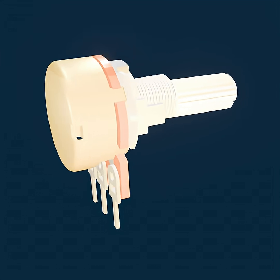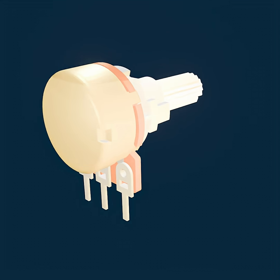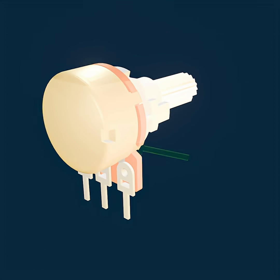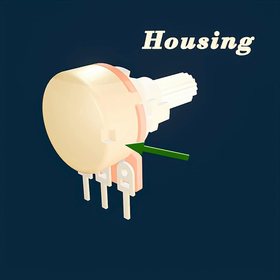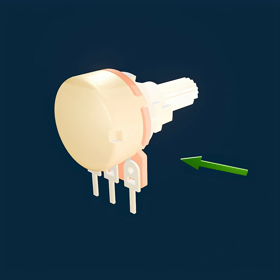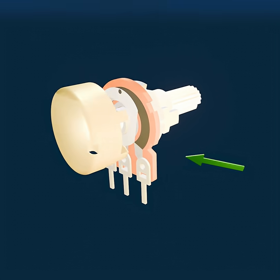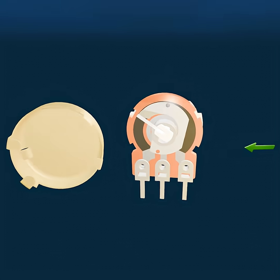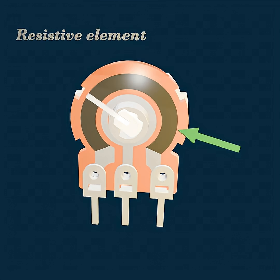The components of a potentiometer consist of housing, a casing designed to protect the internal components. Resistive element — this is a strip or track of resistive material that forms the main body of the potentiometer.